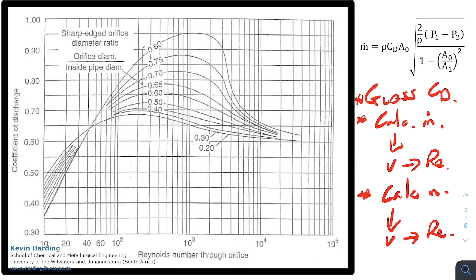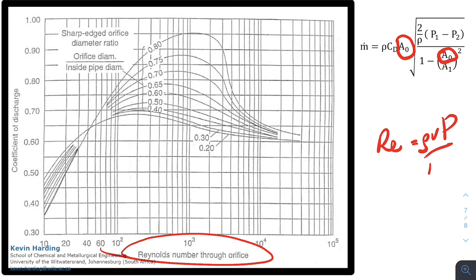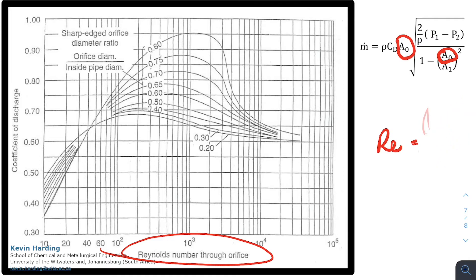When the Cd value is constant, you can stop and you've calculated your mass flow rate. Another common exam problem is to calculate the area of the orifice meter required to achieve a certain flow rate from a given pressure drop. As you can see, the area appears twice in the equation. We face the same problem as before: to find the Reynolds number through the orifice you need rho times v times d over mu, but if you don't have the orifice area you also don't have the orifice diameter, so again you need to solve iteratively.